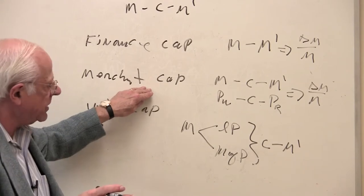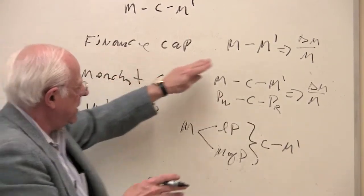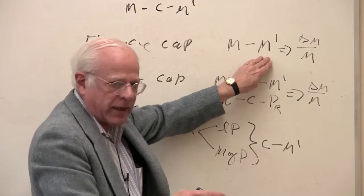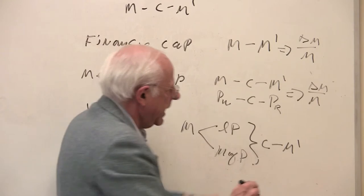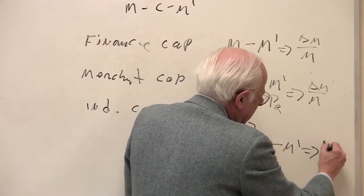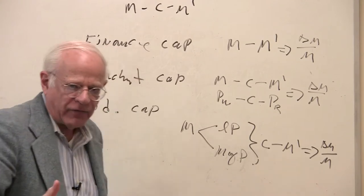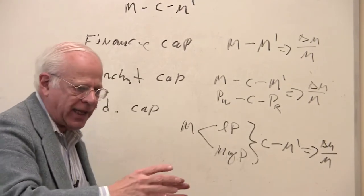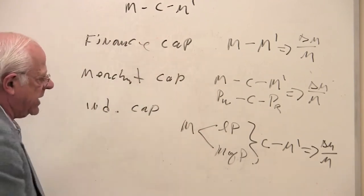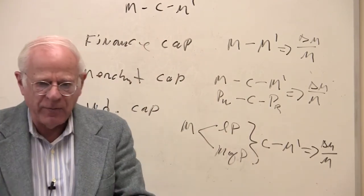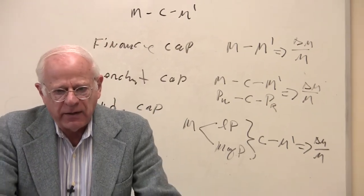So industrial capitalists take their money, buy labor power, means of production, and industrially produce something, the commodity, which they then sell for M prime. Merchant capitalists don't do that. Merchant capitalists buy low, sell high. Finance capitalists give money and get back more money in interest, repayment of the debt in interest than they started with. In all cases, if they're successful, there's a general expansion of capital. So the title of the book, Capital, refers to these, in general, these different kinds of capitalists.